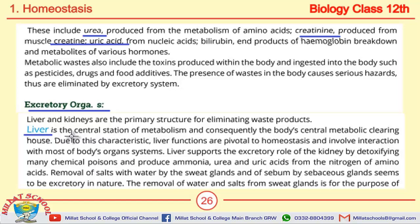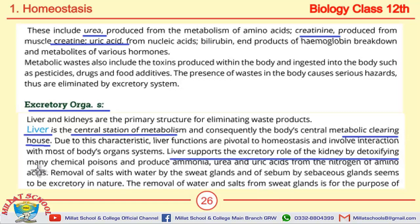The liver is the central station of metabolism and also the metabolic clearing house of the body. An important MCQ: what is the function of liver in excretion? The liver supports the excretory role of the kidney by detoxifying many chemical poisons and produces ammonia, uric acid, and urea from the nitrogen of amino acids. When it detoxifies chemical poisons, the result is ammonia, urea, and uric acid.